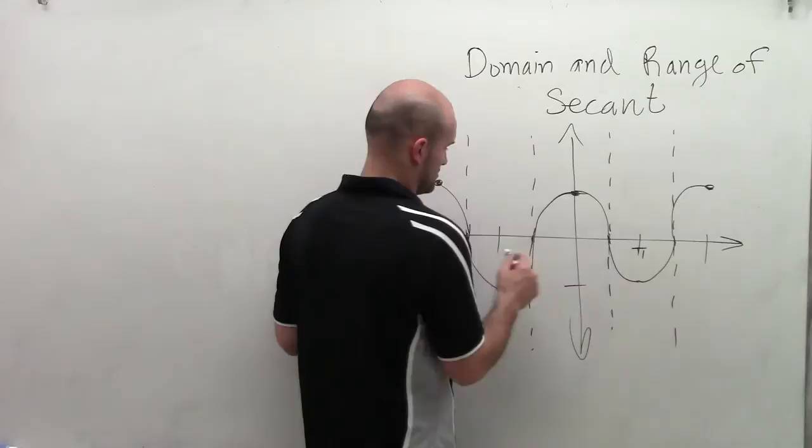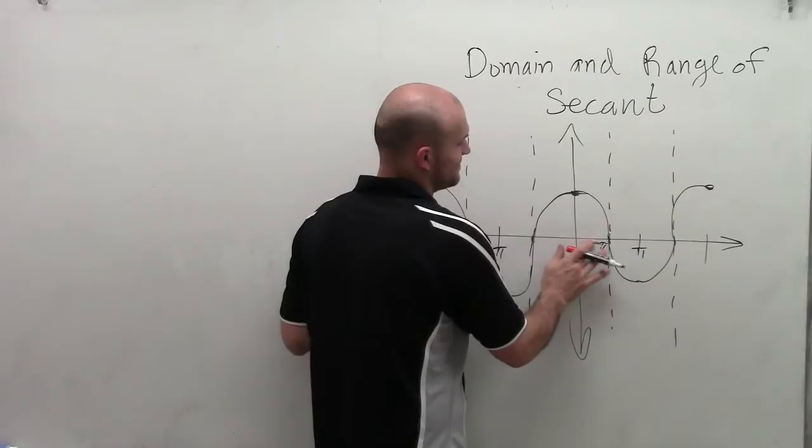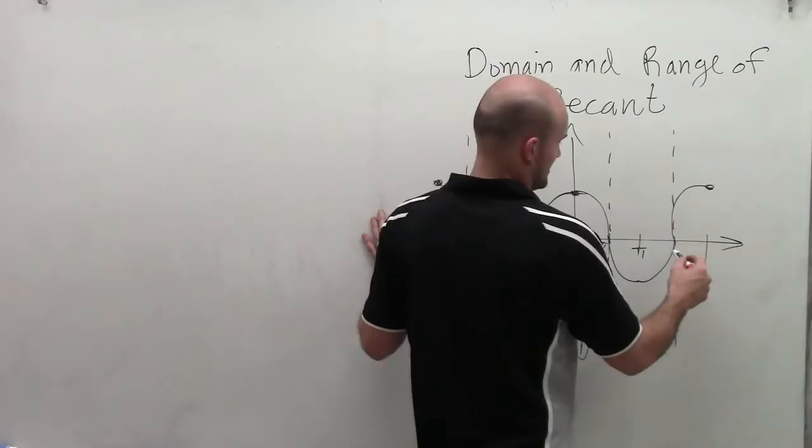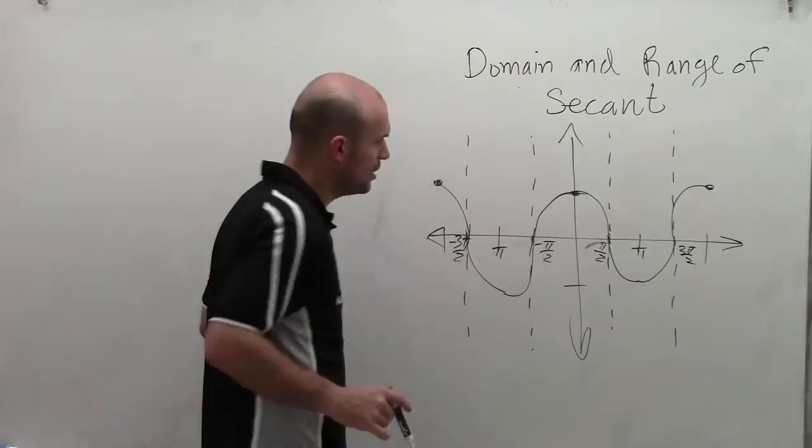For each one of these values, we know it has a max or min at pi. So therefore, an asymptote at pi halves, at negative pi halves, and then at 3 pi over 2, and at negative 3 pi over 2.